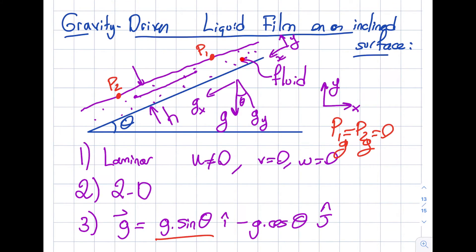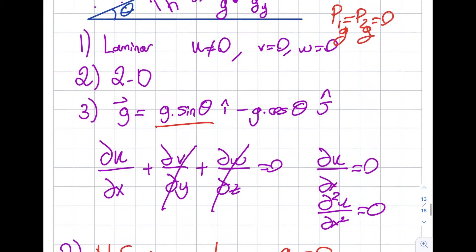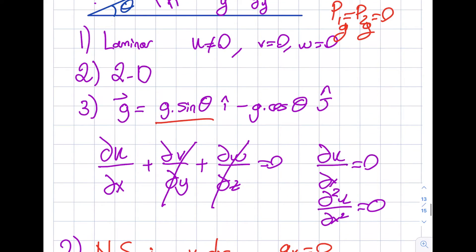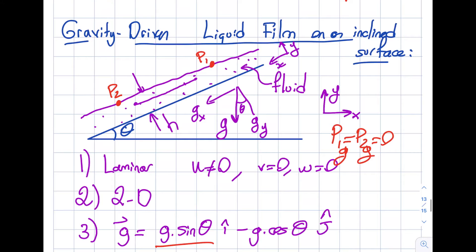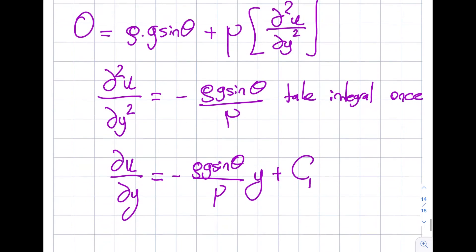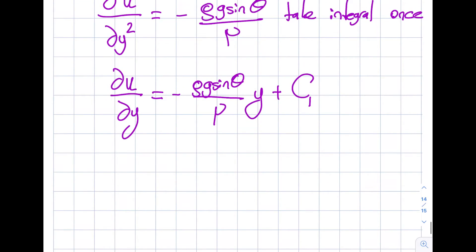Well, I will tell you. Here's the reason: Is u a function of x? Nah, conservation of mass. Is u a function of z? Nah, it's 2D. So u is only a function of y then. So this becomes a regular derivative that you are used to. That's why it becomes c1.